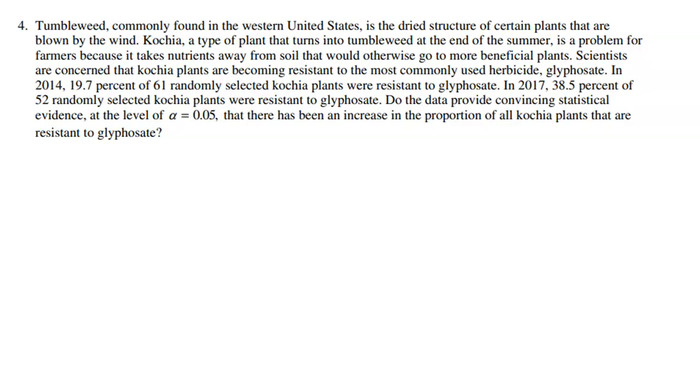Tumbleweed, commonly found in the western United States, is the dried structure of certain plants that are blown by the wind. Kochia, a type of plant that turns into tumbleweed at the end of the summer, is a problem for farmers because it takes nutrients away from soil that would otherwise go to more beneficial plants.